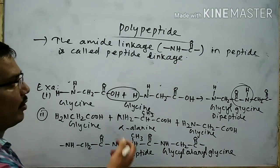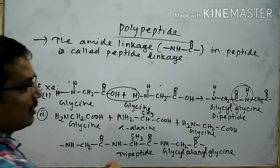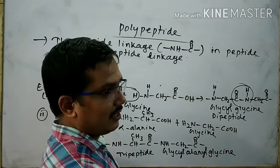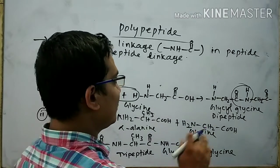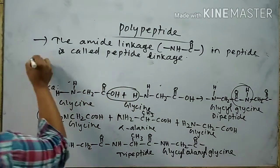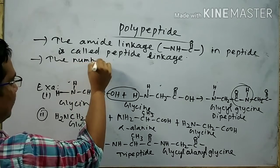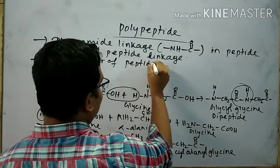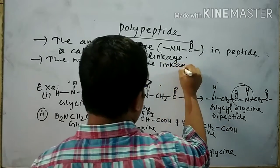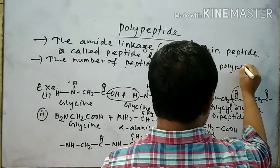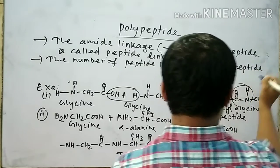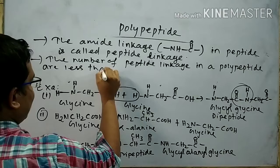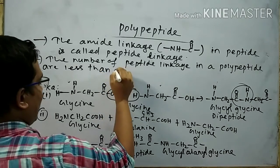This is the structure of a tripeptide. The name of this tripeptide is glycine — the '-ine' ending is removed when it is attached — and finally we write glycine. That means the name is glycyl-alanyl-glycine.